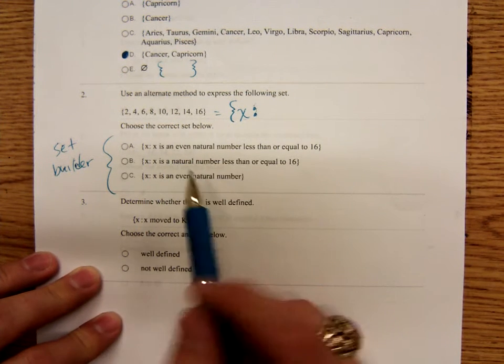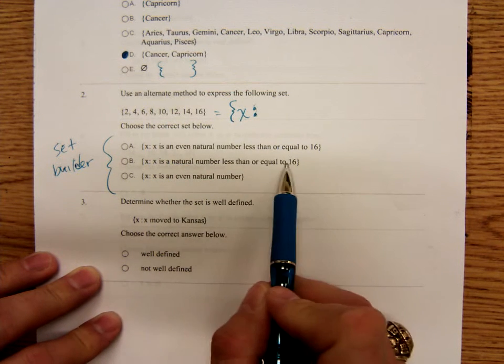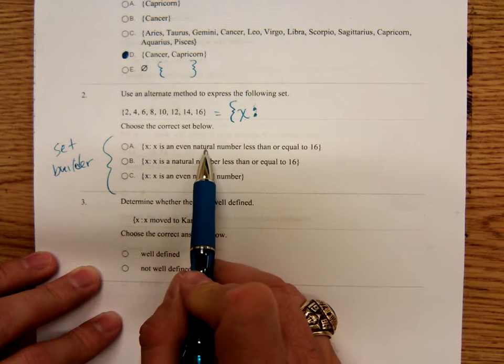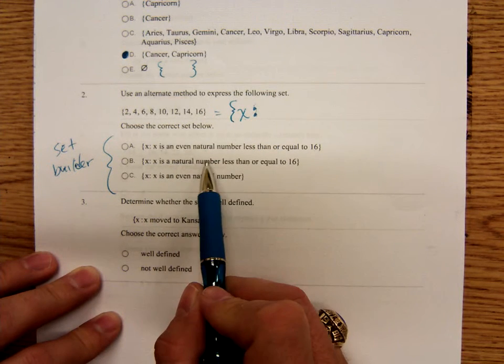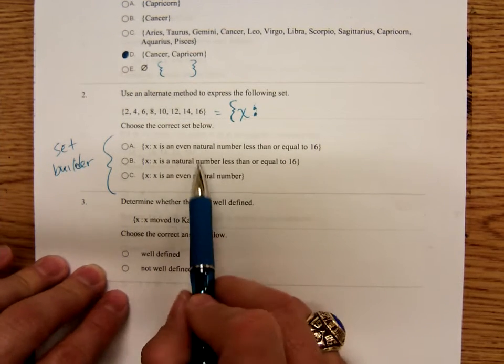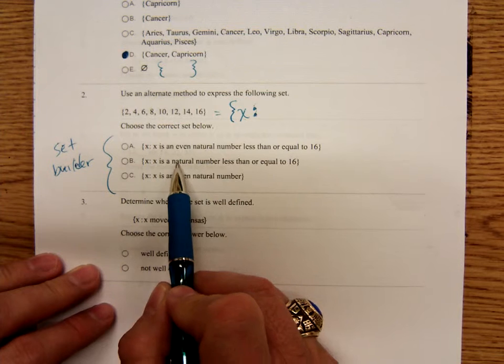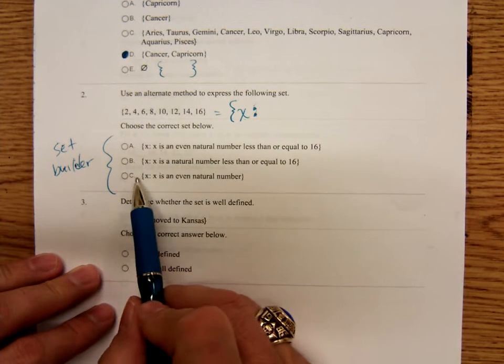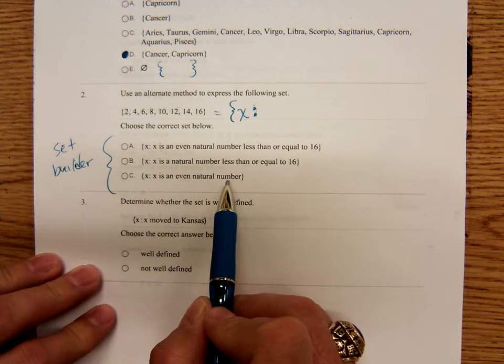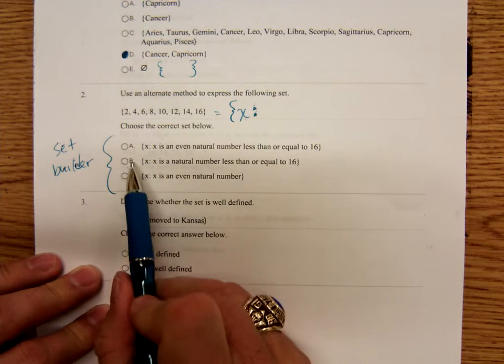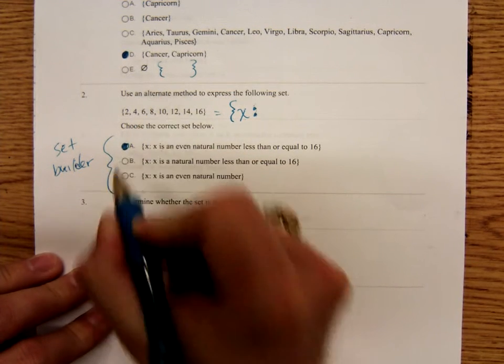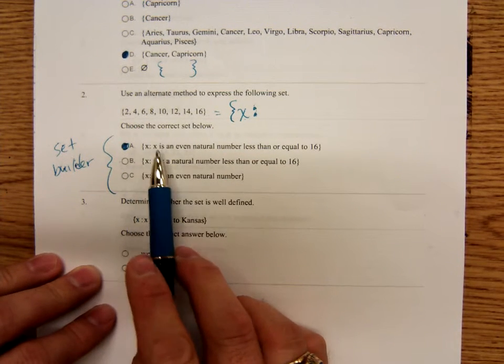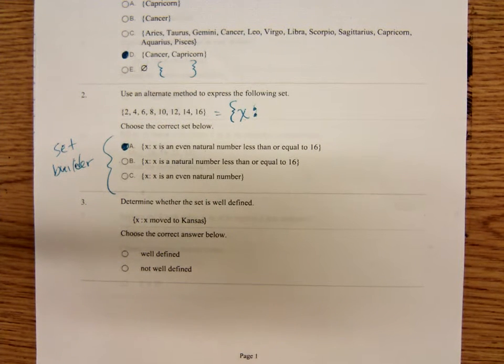Well, let's see, which of these would describe it? You just write out a description. The set of all X such that X is an even natural number less than or equal to 16 or a natural number less than or equal to 16. How do these differ? Well, B doesn't say even. So that would be both even and odd. C just says X is an even natural number. Well, it's not the number 18, 20, 22. So it's not C and it's not B because there's no odd. The answer here is A.